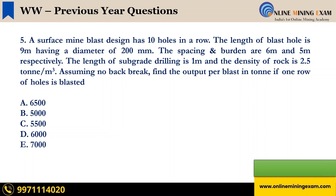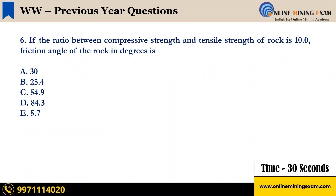Time up. The correct answer is D: 6000. Next question. If the ratio between compressive strength and tensile strength of rock is 10, the friction angle of the rock in degrees is — A: 30 degree, B: 25.4 degree, C: 54.9 degree, D: 84.3 degree, E: 5.7 degree. Your time starts now.